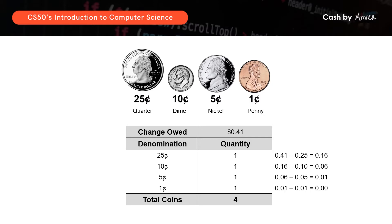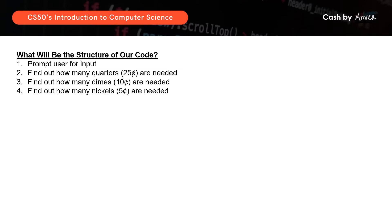So this is exactly what our code will need to show — that for any amount of change keyed in, we need to calculate what is the least number of coins that we need to give. So before we dive in, let's take an overview of what needs to be done and what will be the structure of our code. Firstly, the code must prompt the user for input. And secondly, we will need to find out how many quarters, dimes, nickels, and pennies are needed. So let's work on the first part, which is to prompt the user for an input.